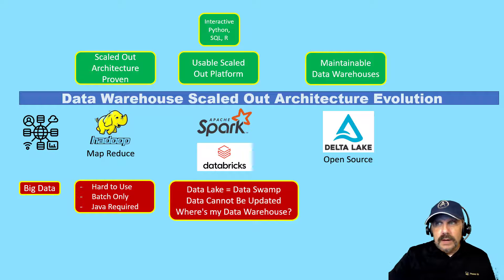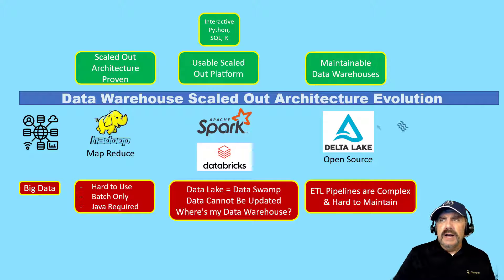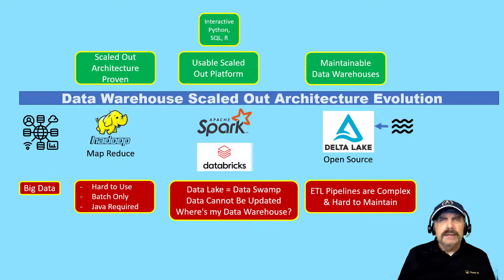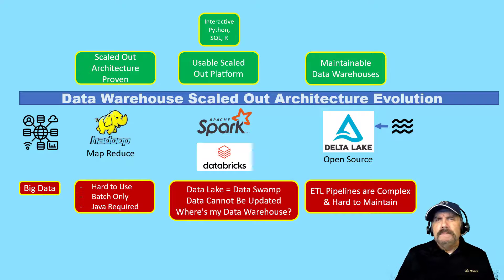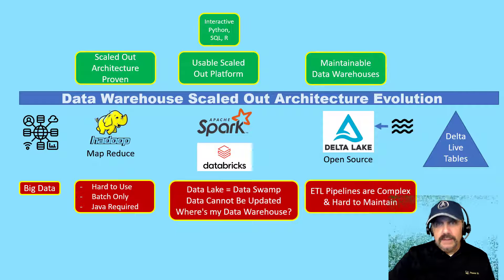But writing the ETL pipelines was still difficult and hard to maintain. You're dealing with streaming types of things, lots of different data sources, many of them real-time — you want to get the data in instantly and process it right away. Even though we can do all these merge and update operations, we're going to have to build some pretty complicated end-to-end pipelines to support the business needs. So that led us to Delta Live Tables.